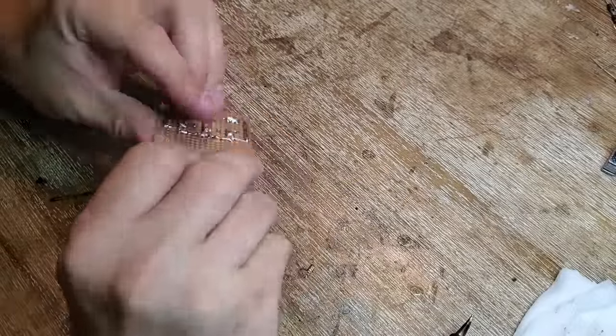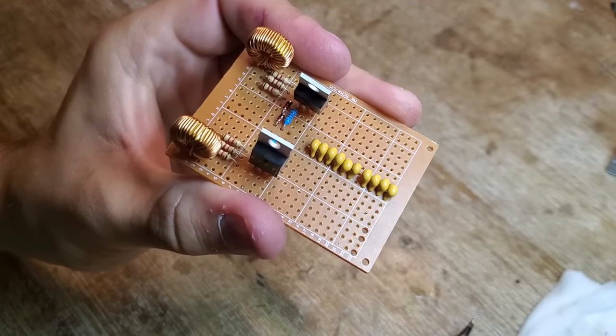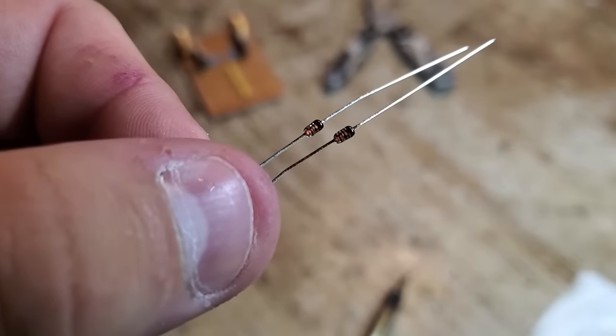Next I solder 10 caps in parallel to form a 1uF bank. The last piece of gate control circuitry are the gate pull-down diodes. These are 1N4148s.